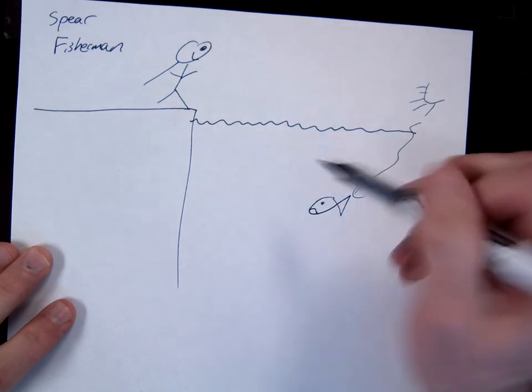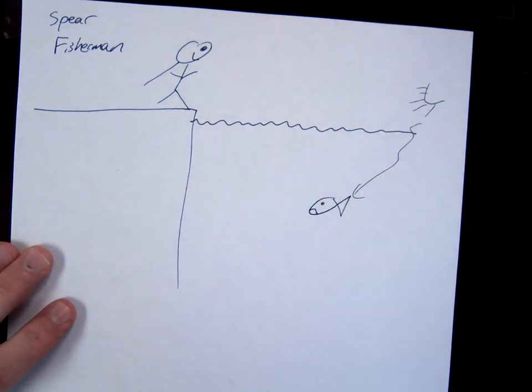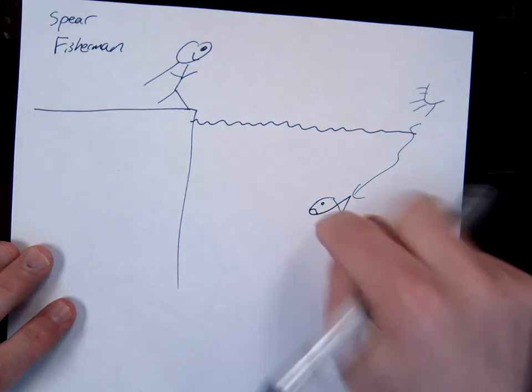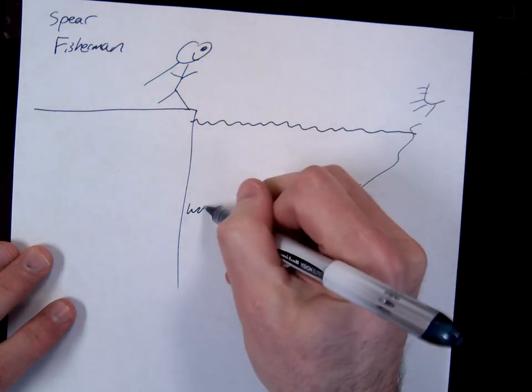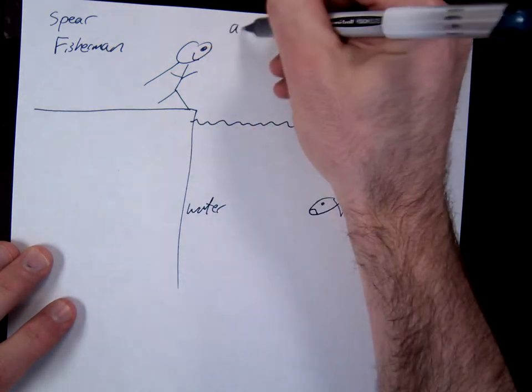Well, here's where the problem comes into play. Light, when it shines off you into my eyes, it travels in a straight line. When it travels from the fish into my eyes, it doesn't, because we're now going from water to air, right?